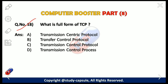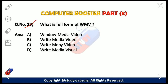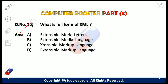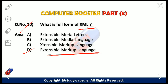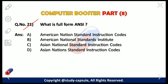Our next question: what is the full form of TCP? The answer is C — Transmission Control Protocol. Our next question: what is the full form of WMV? The answer is A — Windows Media Video. Our 20th question: what is the full form of XML? The answer is D — Extensible Markup Language. XML is used to describe data. It is a formal recommendation from the World Wide Web Consortium and is similar to the Hypertext Markup Language.